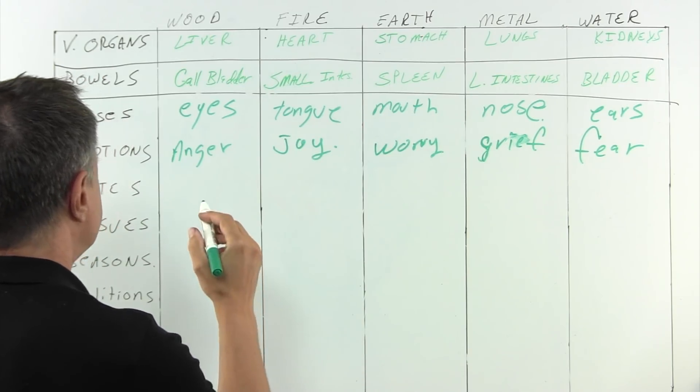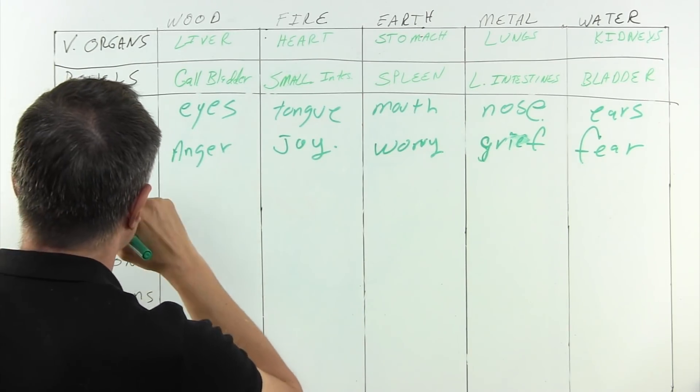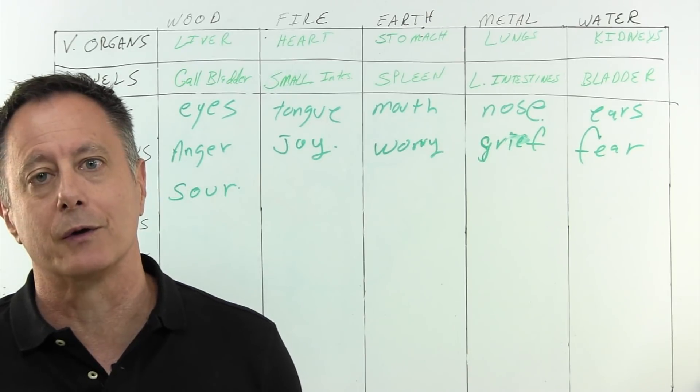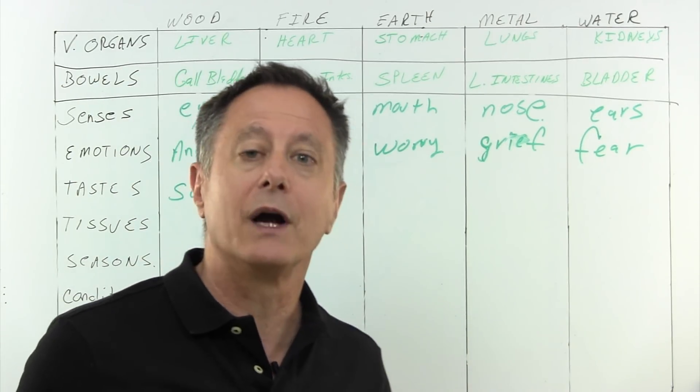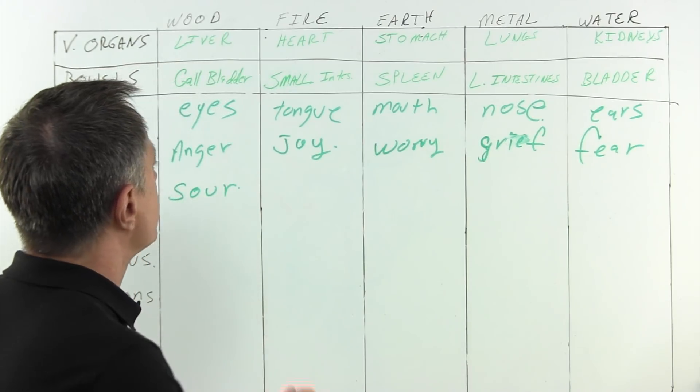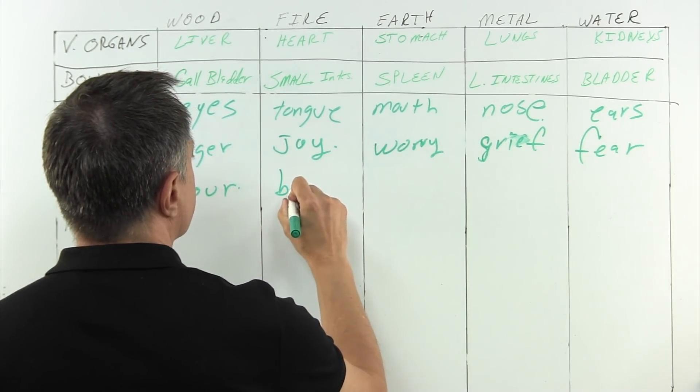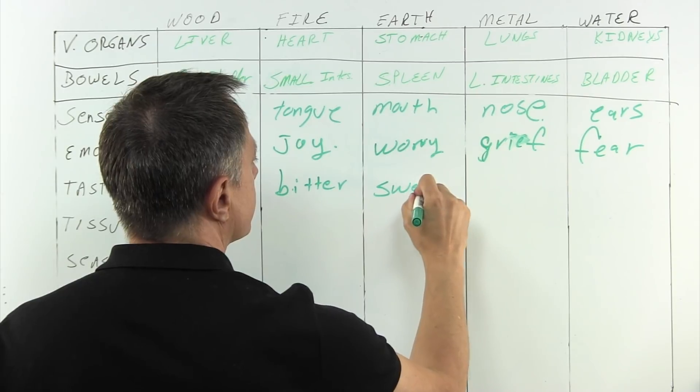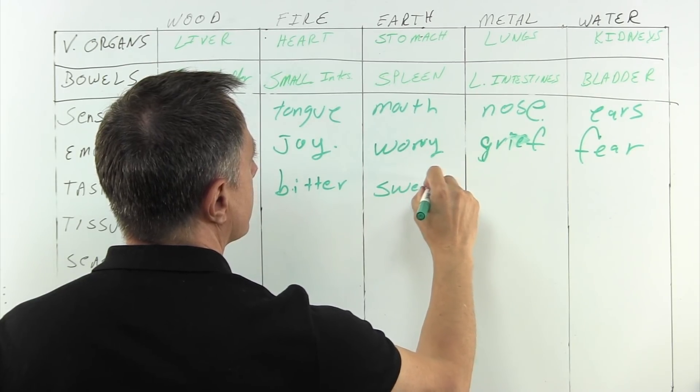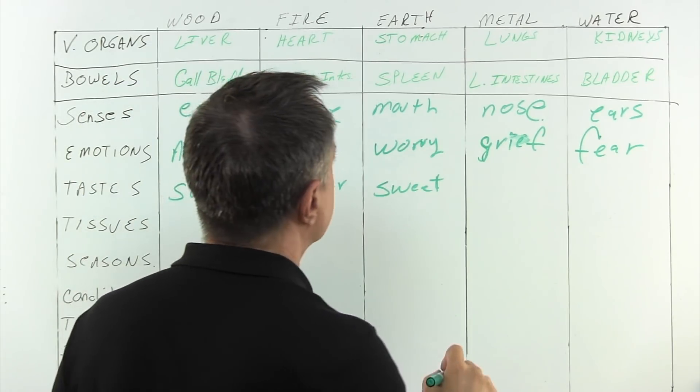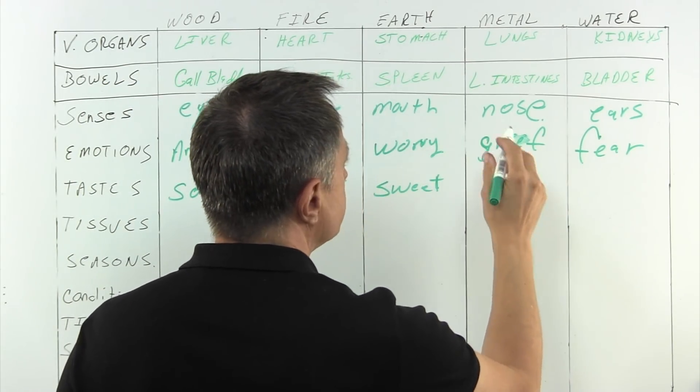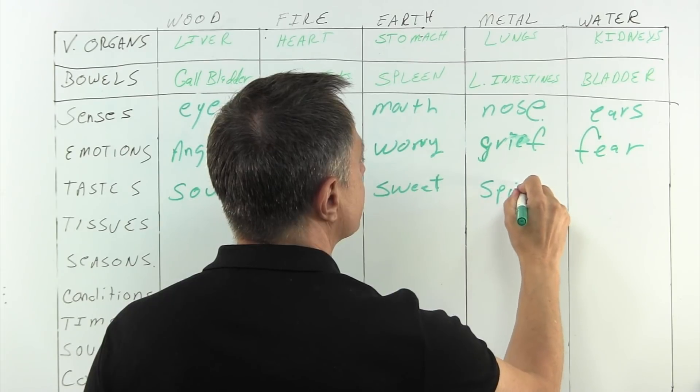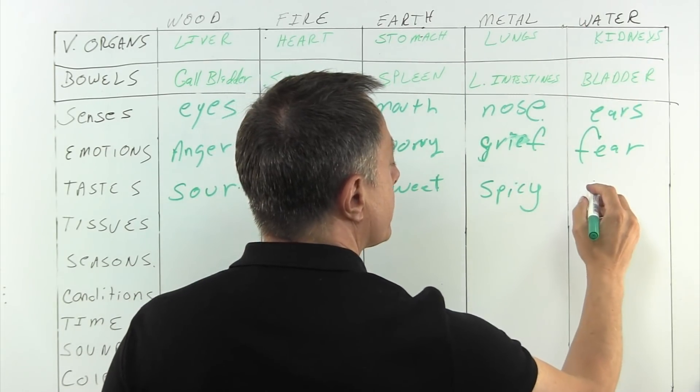Tastes, right? So, wood is associated with the taste of sour. You're angry at someone. That interaction left a really sour taste in my mouth, right? That fight I had with my wife last night left a sour taste in my mouth. Joy is related to bitter. Earth is mapped to sweet. Metal is mapped to spicy. And water is mapped to salty.